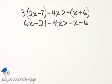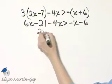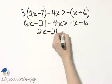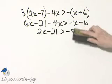Do we have any terms that we can combine? The answer is yes, because here I've got 6x minus 4x, and that's 2x, and then minus 21 is greater than negative x minus 6.